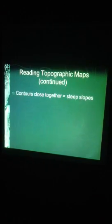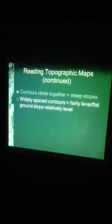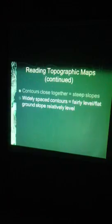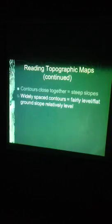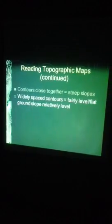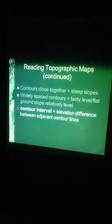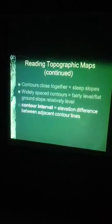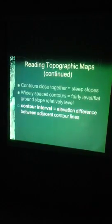Contours that are close together represent an area that has steep slopes. The widely spaced contours — the ones that are further apart — represent an area that's fairly level or flat, and the ground slope is relatively gradual. The contour interval is the elevation difference between adjacent contour lines, meaning the change in elevation from one line to the next.